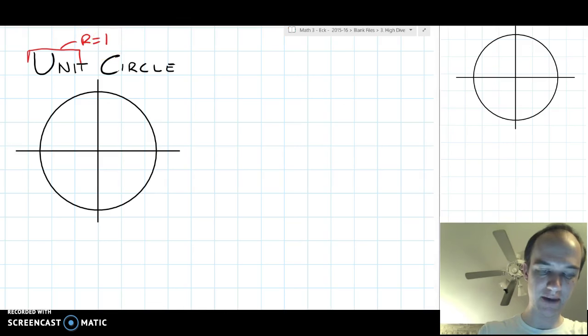So the radius is 1, and if we have a point on the unit circle, we'll pick that point, and we'll give it coordinates x comma y.